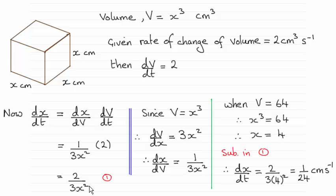Now we know that when the volume is 64, we can work out what x will be, because volume is given by x³. So x³ = 64, leading to x = 4.